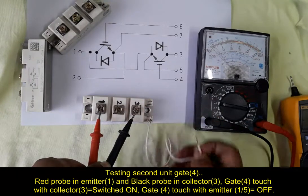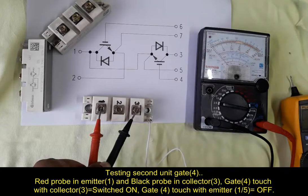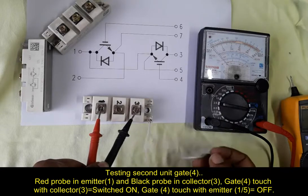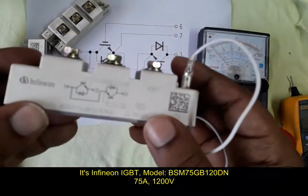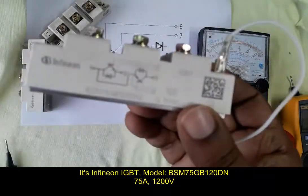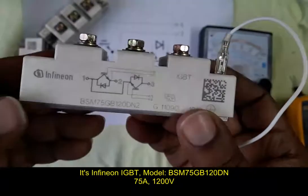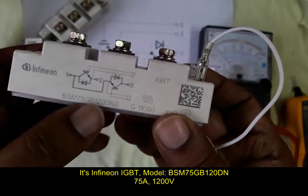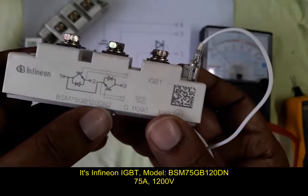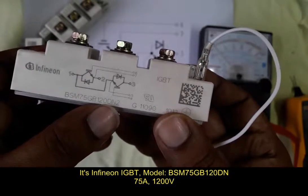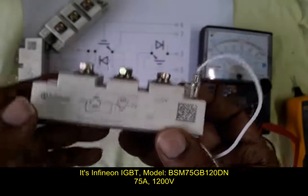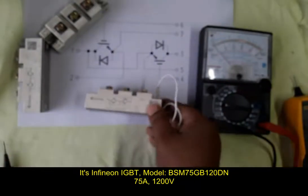Also with gate 5 it will turn off. So it's Infineon brand IGBT, model BSM75GB120DN, that's 75 ampere, 1200 volt capacity IGBT. So in this way we can test dual mode IGBT.